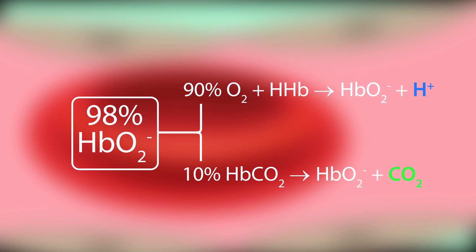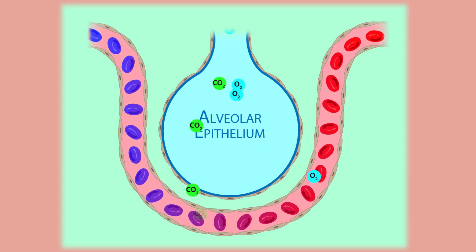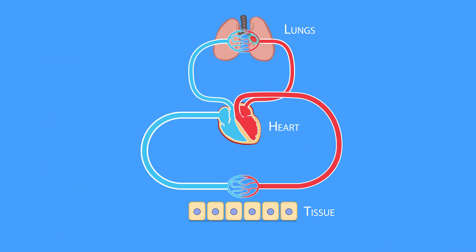Of the oxygen that binds hemoglobin, 90% displaces hydrogen ions, while the other 10% displaces carbon dioxide. Once oxygen is taken up by the red blood cells, the red blood cells are transported throughout the circulatory system.